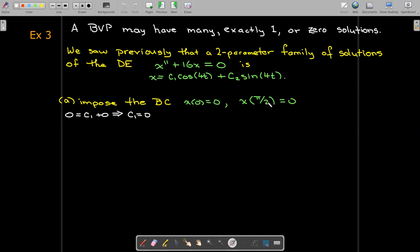When I multiply π/2 times 4, I get 2π. And cos(2π) is going to be 1, and sin(2π) is 0. So I'm going to have c_2 times sin(2π).